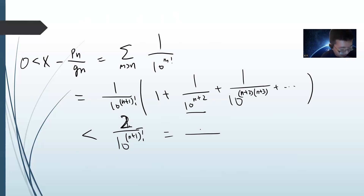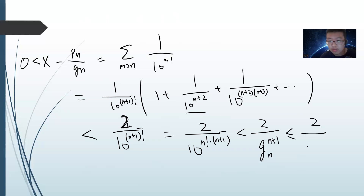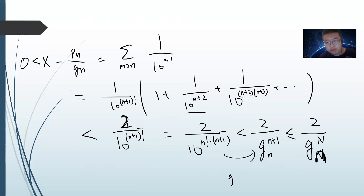So I can bound this as 2 / (10^(n!) × (n+1)), which is less than 2 / Q_n^(n+1), since Q_n ≤ 10^(n!).